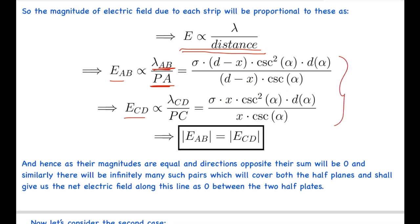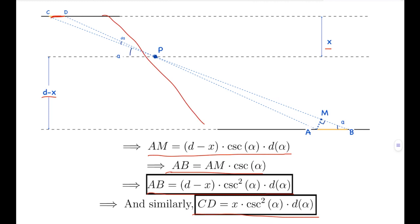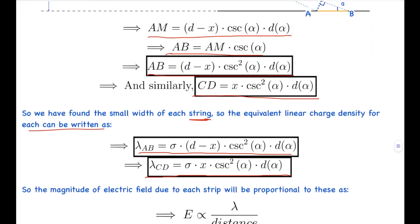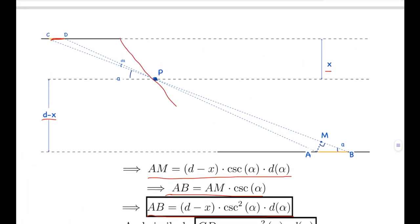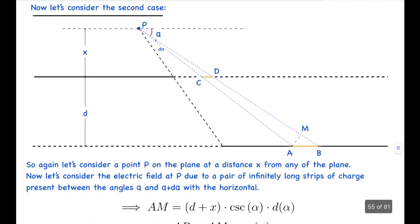Since the magnitudes of the electric field due to the two strips are exactly equal and their directions are opposite, their sum is zero. Similarly there will be infinitely many such pairs which cover both half-planes, and each pair's contribution cancels. So the net electric field along the line between the two half-planes is zero. The electric field magnitude is zero for all points on this line inside the two half-plates.